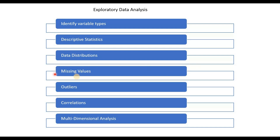Then we move on to finding the missing values. Missing values are very important because we need to decide what to do with them. You can fill them with the average or the median, or you can use more complex strategies like machine learning algorithms. Whatever your strategy is, it has to be considered carefully because choosing a wrong strategy may introduce bias in your data.